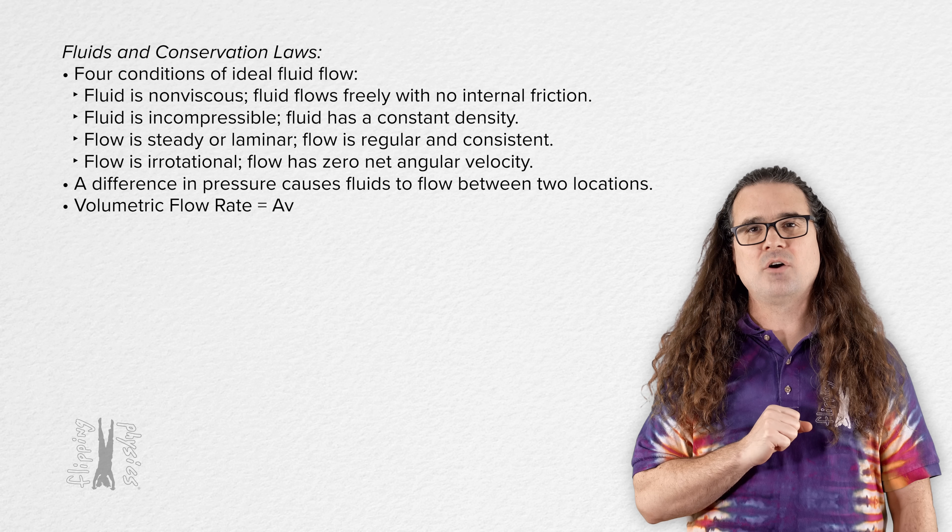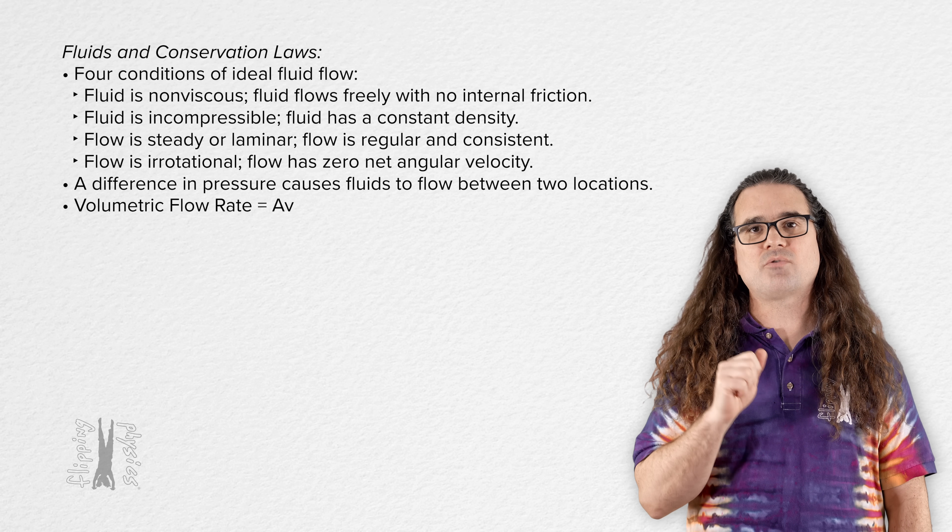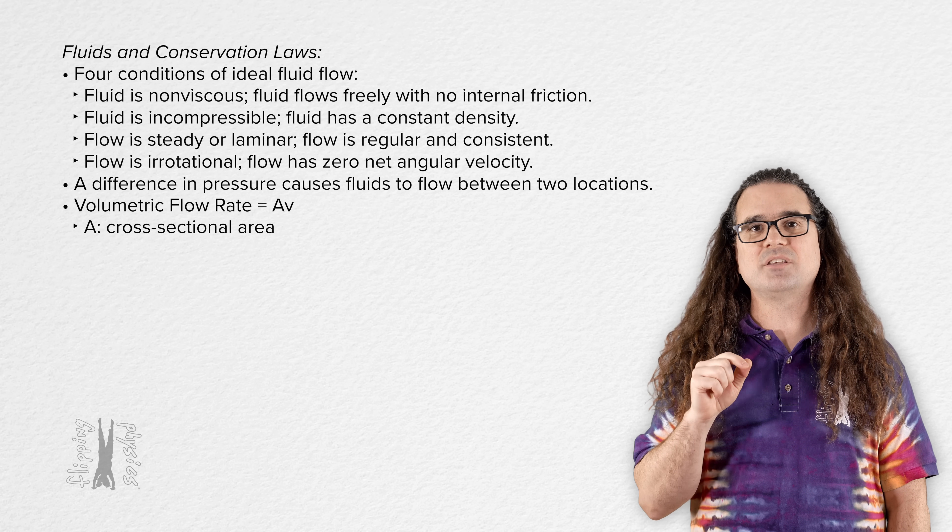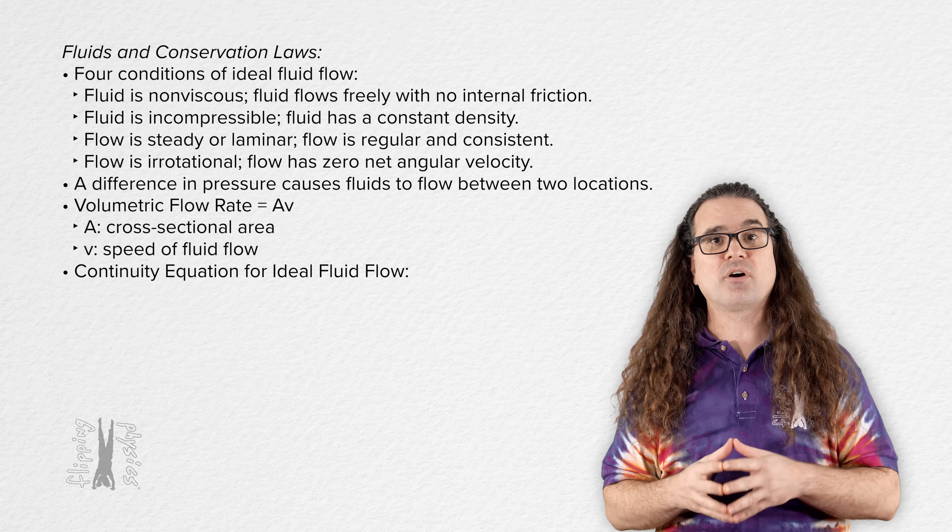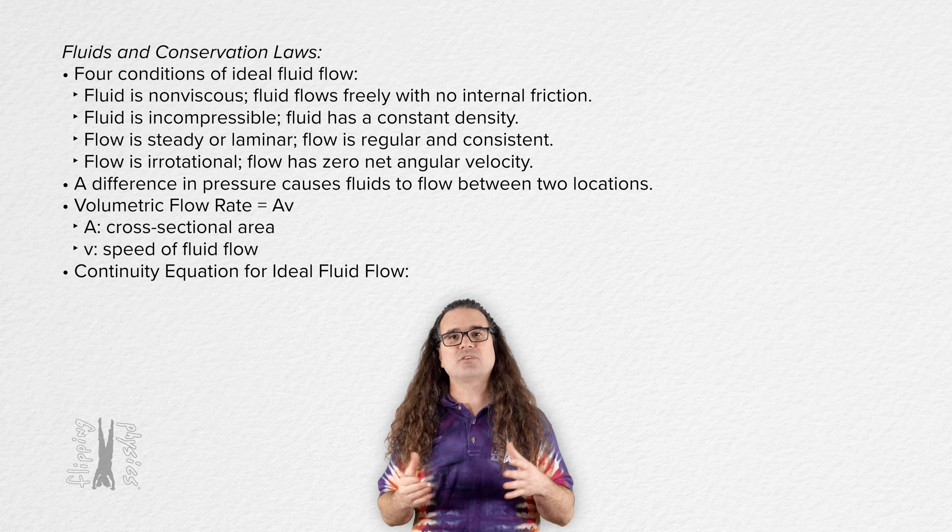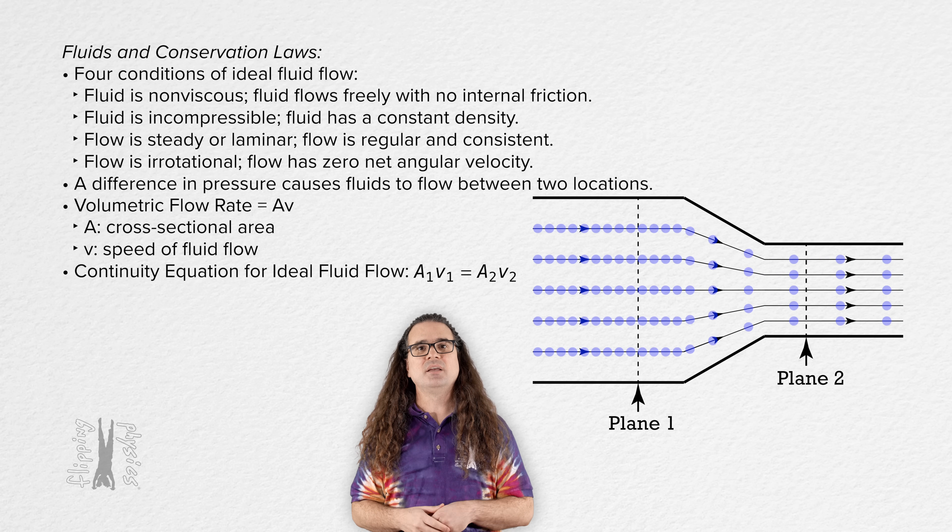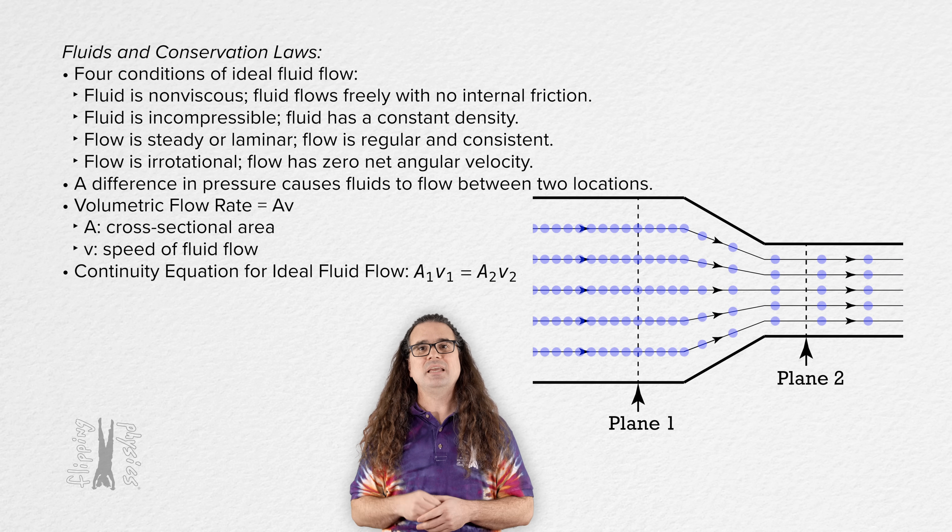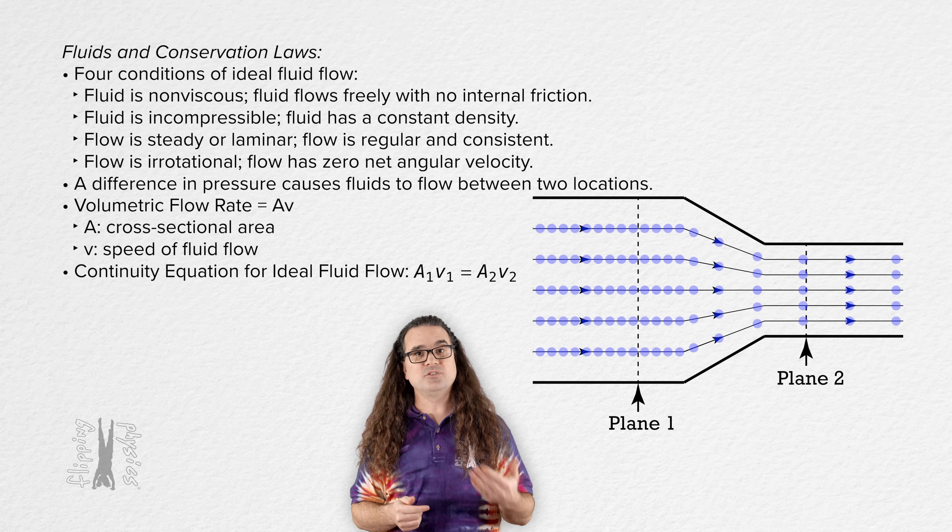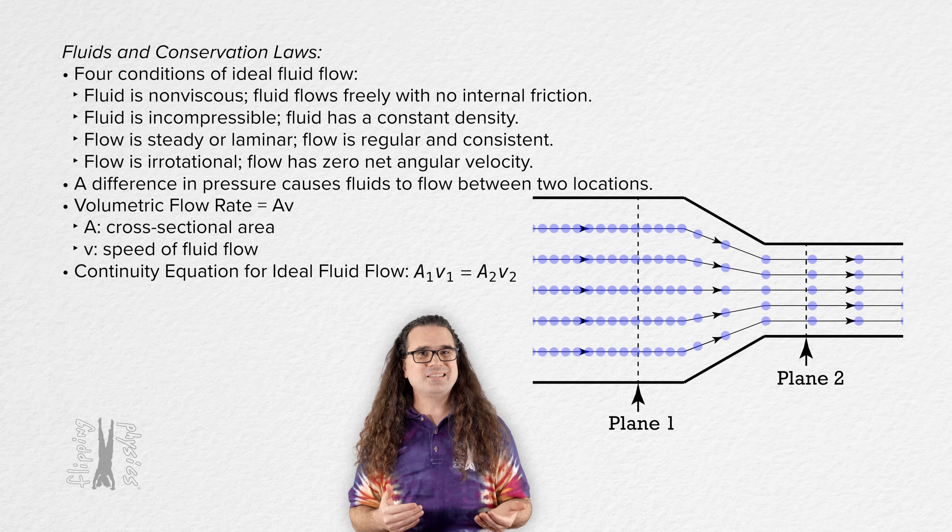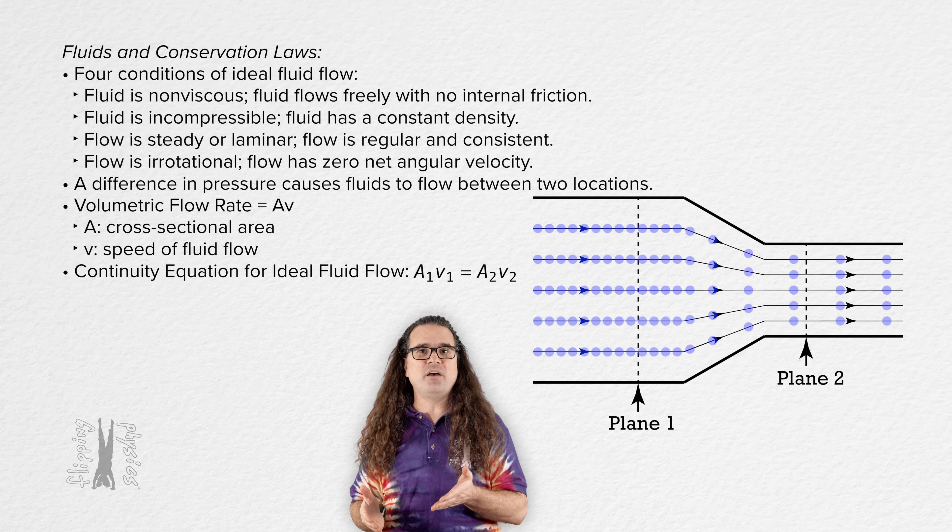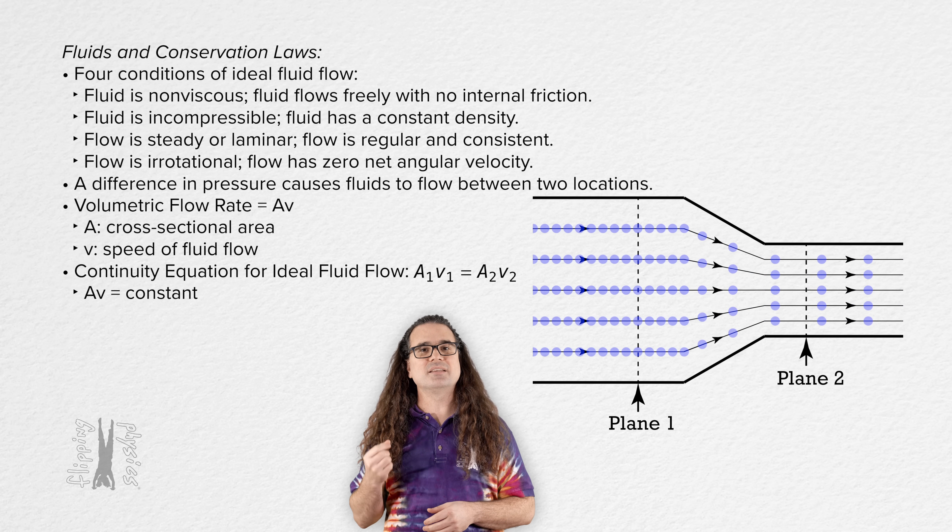Alright. The volumetric flow rate of a fluid is equal to the cross-sectional area of the fluid times the speed at which the fluid flows. The continuity equation for ideal fluid flow is A₁v₁ = A₂v₂. Another way to say this is that the volumetric flow rate of the fluid is constant.